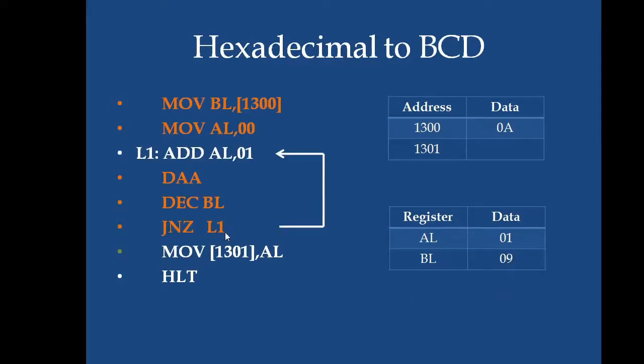Jump not zero L1. This BL value is checked for 0. Since it is not 0, the execution of the program is moved to the label address L1. What will be the address value at L1? The next instruction to be executed will be add AL comma 01.